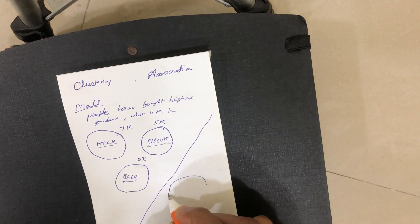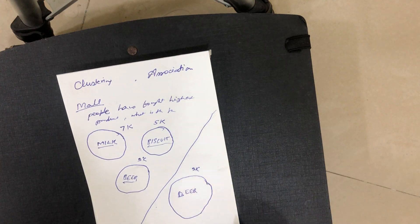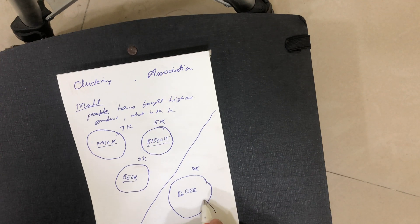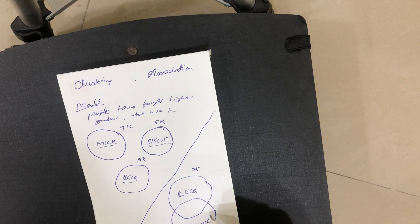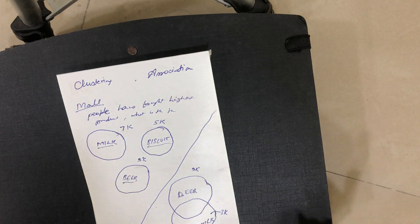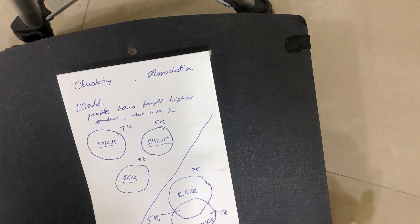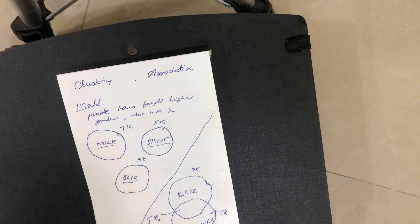For example, among the 9K people that have bought beer, if we find out that among those who have bought milk, 3K people are only interested in buying milk, and 5K people are interested in buying milk as well as beer — we will get an association result. Most of the people buying beer are also buying milk along with it. That is a type of association we have found.